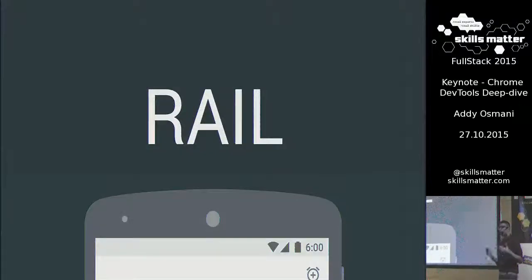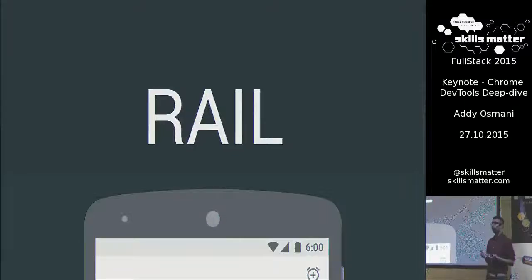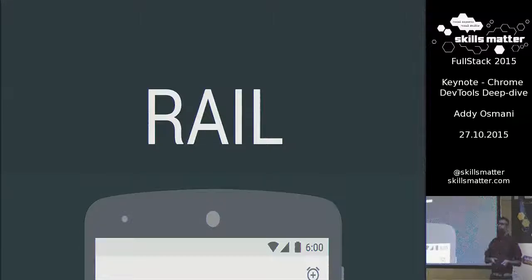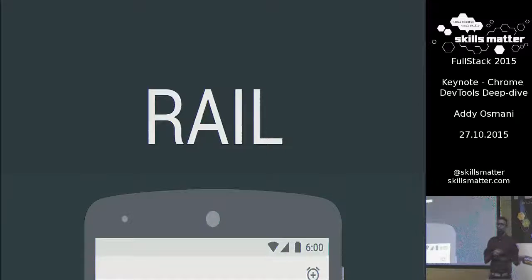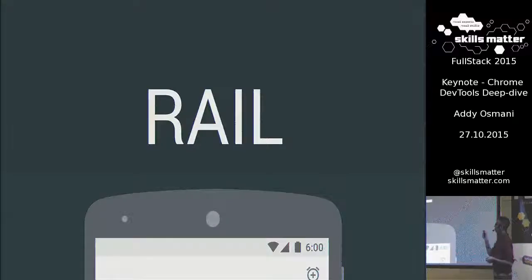Over the last year on the Chrome team, we thought it would be interesting to try framing the performance conversation in a way that made sense for the world we're in today. A lot of us are building for mobile — we have to think about touch, limited device capabilities. It's a slightly different world from how we used to build desktop apps. So we came up with this term called RAIL.